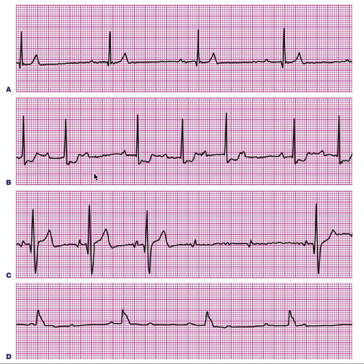If you see here, the PR interval is long, then here it is shorter, then it is prolonged again, and it becomes so prolonged that the P wave is almost buried into the T wave, and there is no QRS complex. Then coming back, there is PR prolongation again, and then more prolongation — a progressive prolongation of the PR interval until a P wave is not followed by a QRS complex.